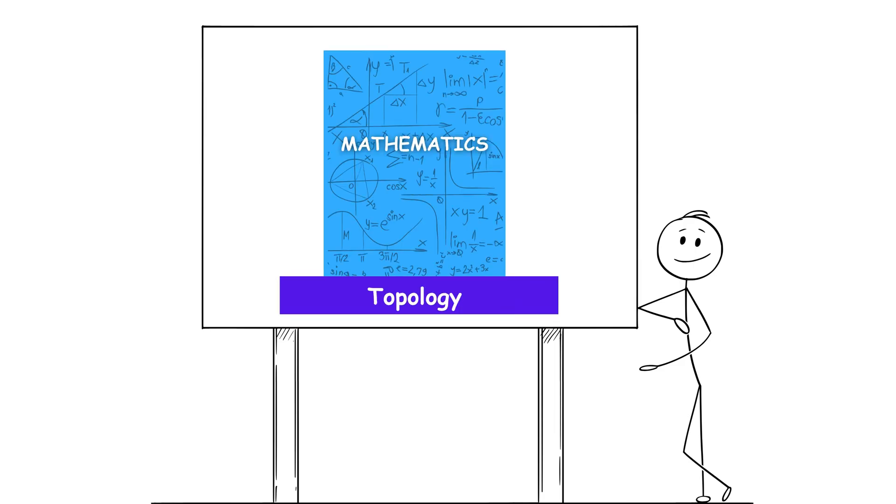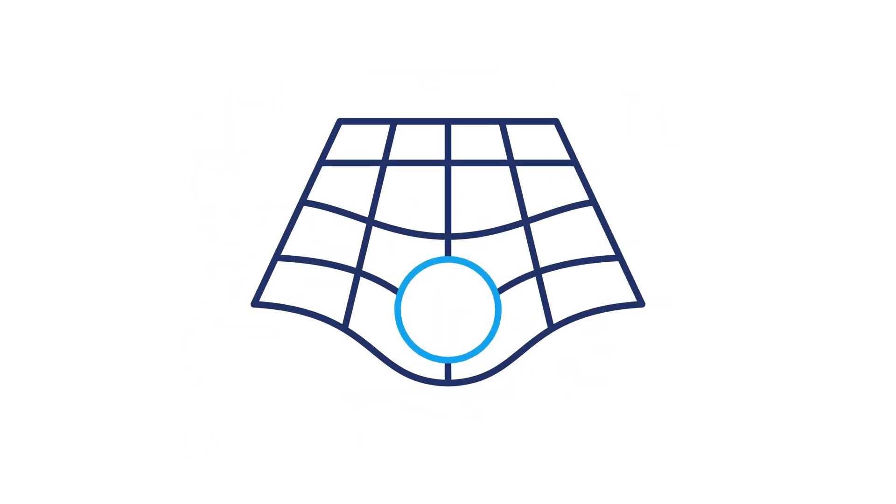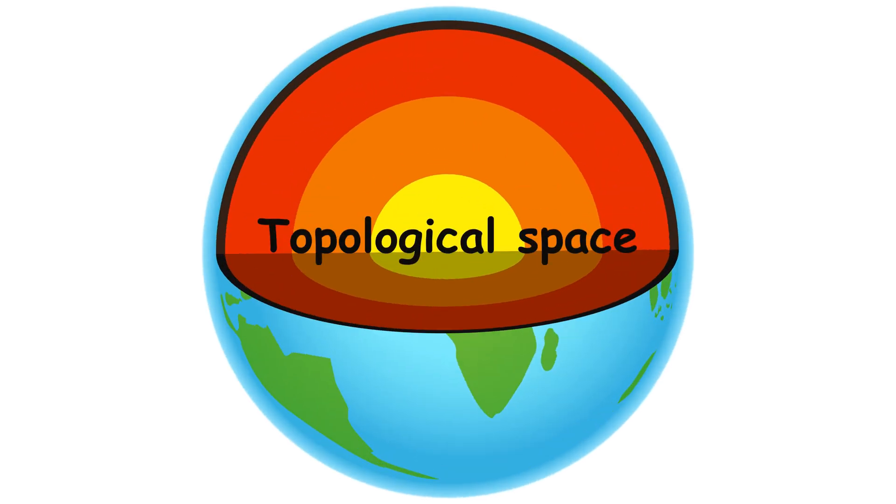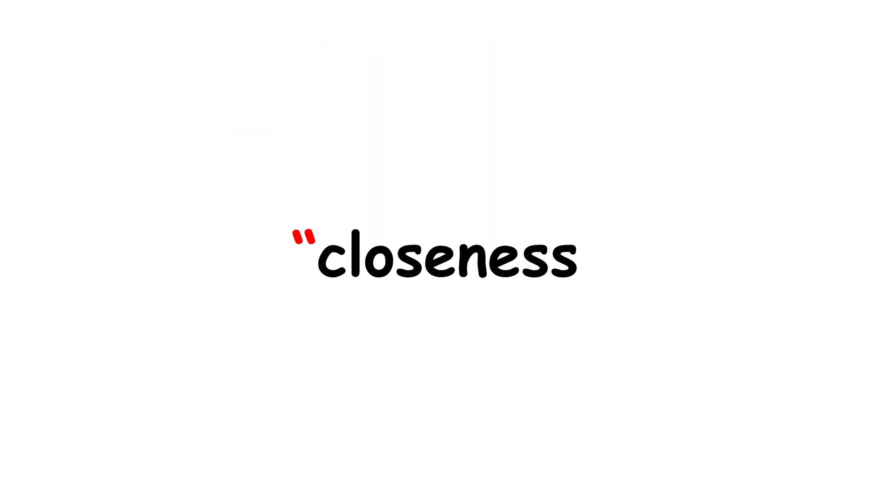Topology studies the properties of spaces and figures that remain invariant under continuous deformations such as stretching, twisting, or bending, as long as there are no cuts or new attachments. Thus, a circle and an ellipse are topologically equivalent, whereas a circle and a figure with a hole are not. At its core lies the concept of a topological space, which generalizes the notion of closeness without strictly depending on metric distances.